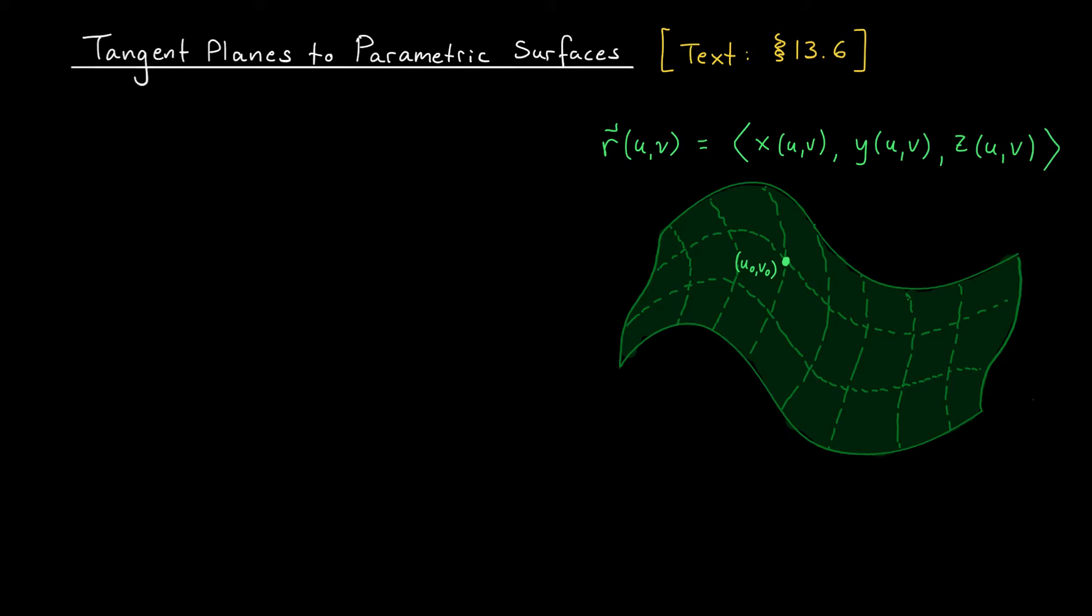Let's suppose that we have some parametric equation r of uv equals x of uv, y of uv, and z of uv, and the corresponding parametric surface is something like this. These dashed lines that you see here are the grid lines that I mentioned in my last video. They're what we get by setting one of the parameters equal to a constant and letting the other parameter range over its entire interval of values. Maybe this line here is what we get by setting u equal to u0 and letting v range over its domain, and maybe this line here is what we get by setting v equal to v0 and letting u range over its domain.